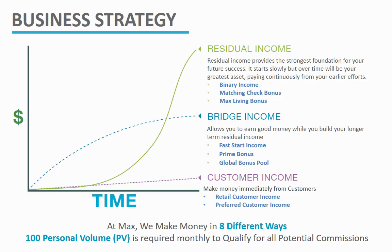For you to earn these bonuses, Max says that you must have generated a minimum of 100 PV — 100 personal volume. Every product that you buy from Max International comes with a volume attached to it. Max International is saying that you must have bought products that will give you 100 PV for you to benefit from this.